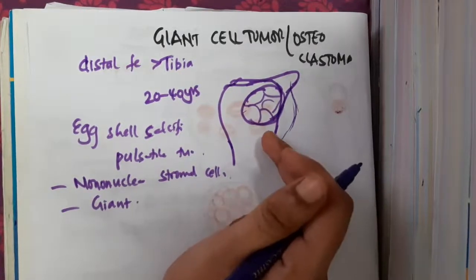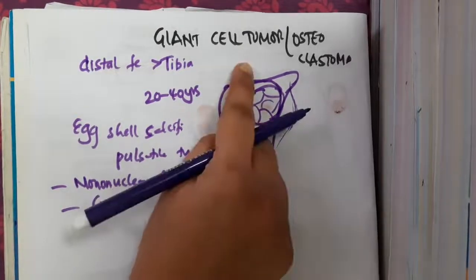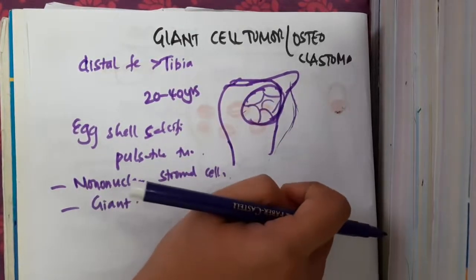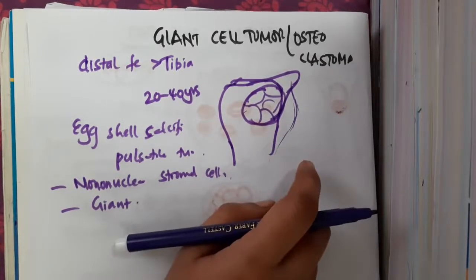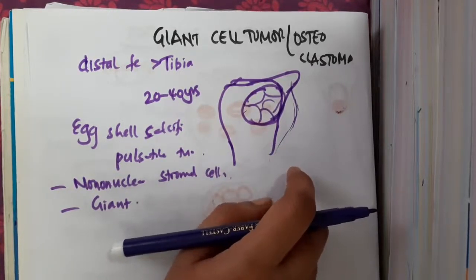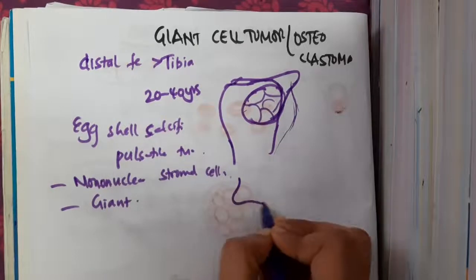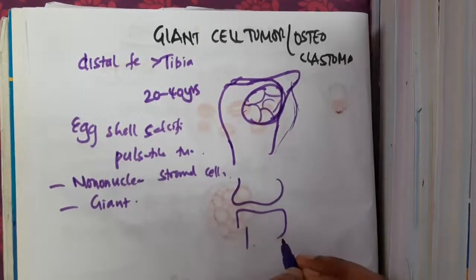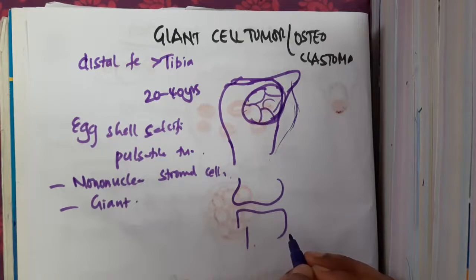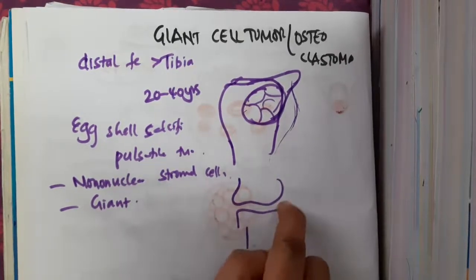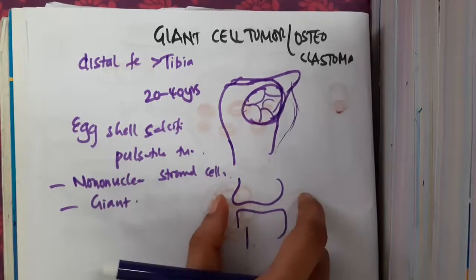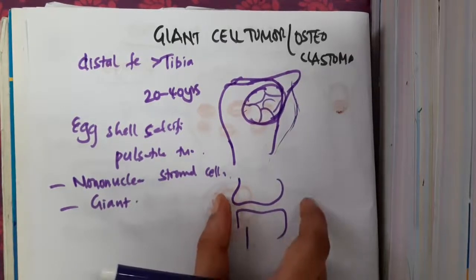If it is a benign tumor, simple curettage can be done, and curettage with grafting can be done. If the tumor is around the knee, a hemicondylar osteo-allograft reconstruction can be done — you remove the tumor and then do graft reconstruction.